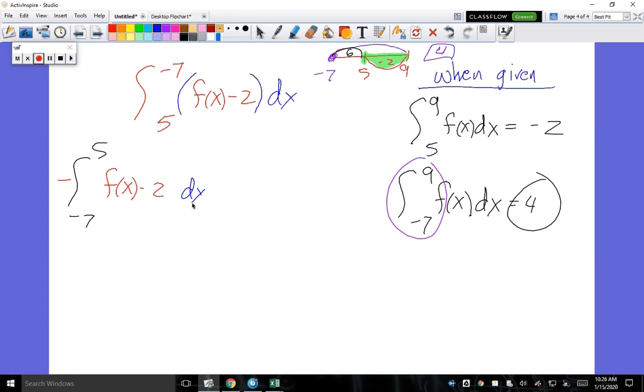Okay, so now, the integral of the difference is equal to the difference of the integrals. So I'm going to split this up, and there's two ways you can do this. You can split it up like this, and then minus from negative 7 to 5 of 2. But if you do it like this, chances are you might make a mistake that I just made. Can you find the mistake?